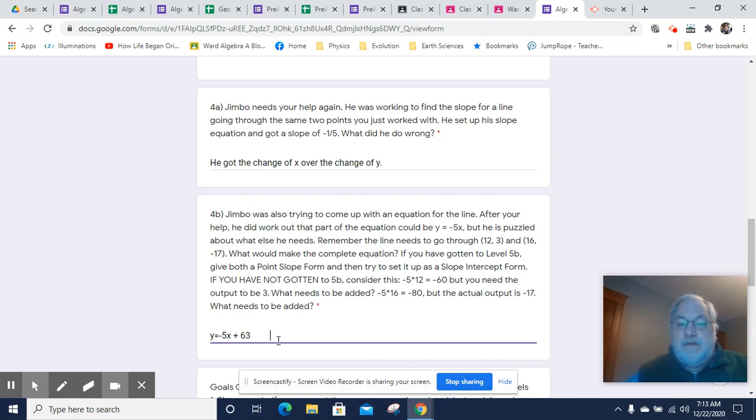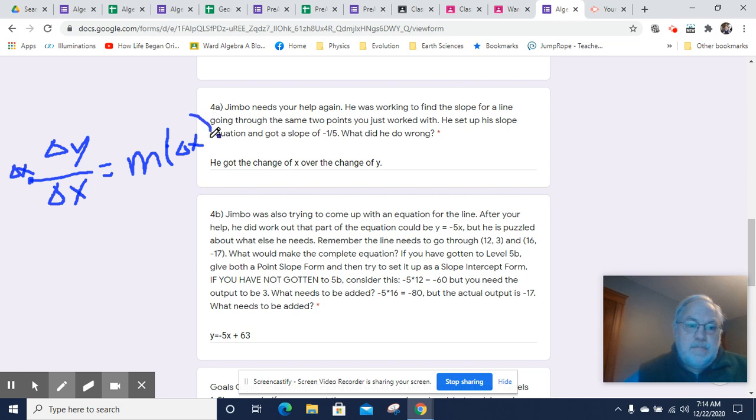Now, if you have gotten to level 5b, the point slope form, you might have noticed that we can rearrange. So we know that slope equals change of y, that's that difference of y's, over change of x, right? So we can rearrange this equation by multiplying both sides by change of x. And change of x over here goes away, and I'm left with change of y equals slope times change of x.